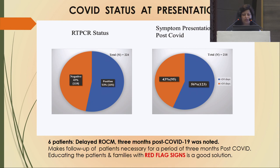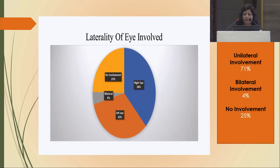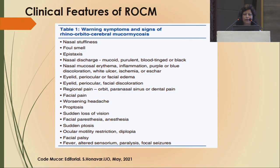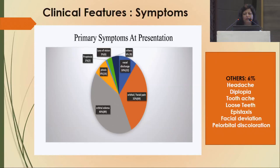Of the patients, 47% were RT-PCR negative and 53% positive — non-COVID patients were also getting mucormycosis. In 43% of cases, ROCM was seen after more than 14 days of having COVID, while 56% developed it within 14 days. Laterality: unilateral involvement in 71%, bilateral in 4%, and 25% had no orbital involvement. Warning symptoms included nasal stuffiness, foul smell, epistaxis, nasal discharge, nasal mucosal edema, eyelid edema, regional pain, worsening headache, and proptosis.